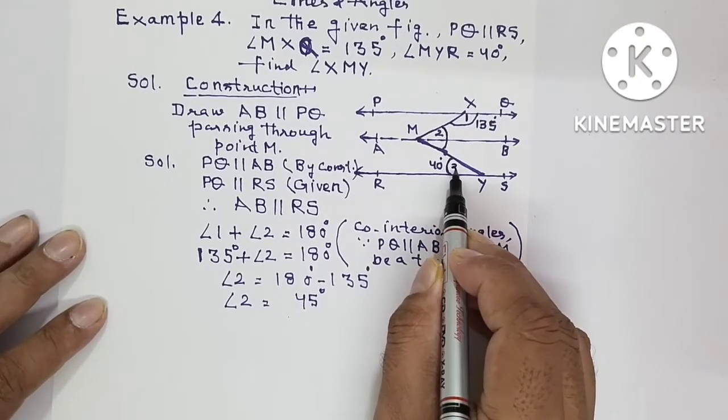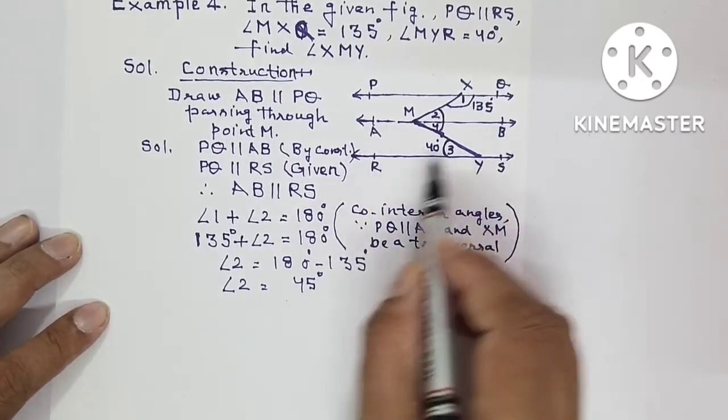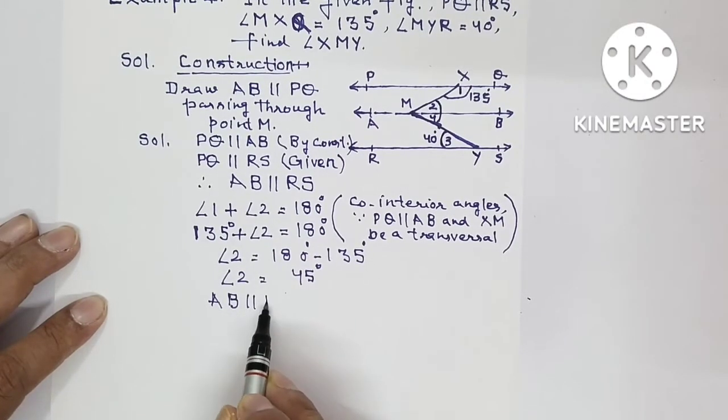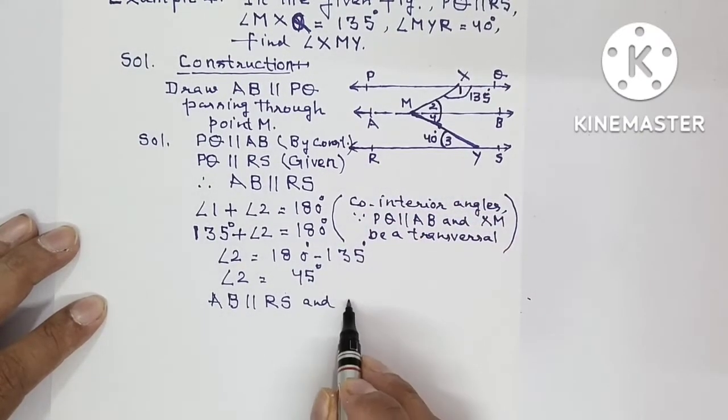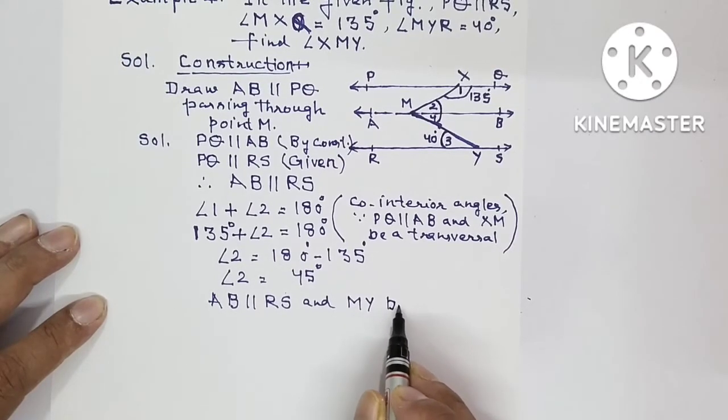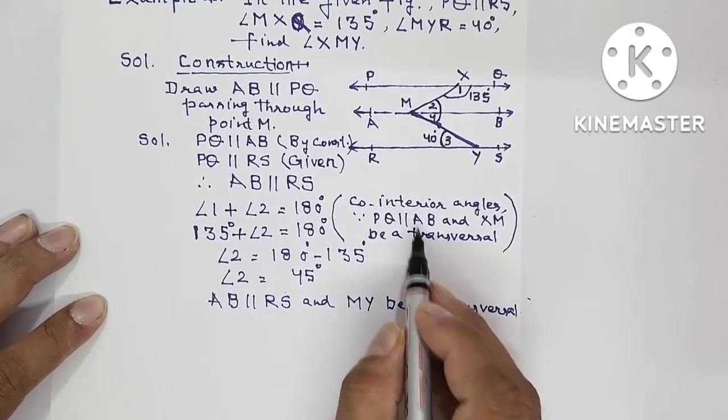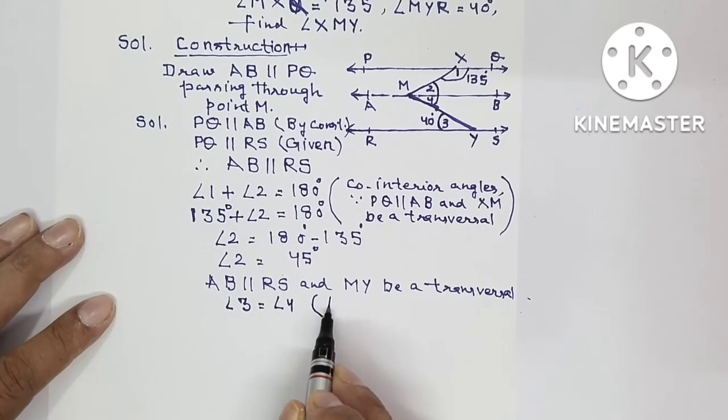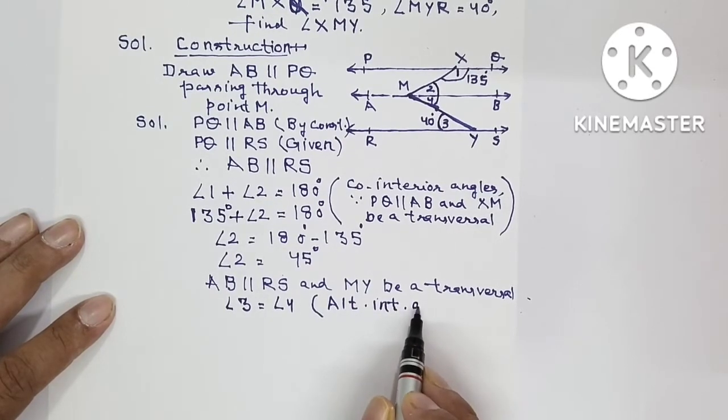Now label this angle as 3 and this angle as 4. Now we will write AB is parallel to RS and MY be a transversal. So angle 3 and angle 4 will be alternate interior angles. Angle 3 is equal to angle 4, and the reason is alternate interior angles.